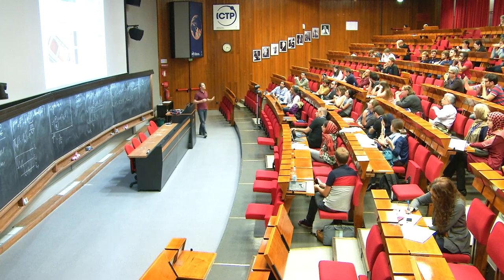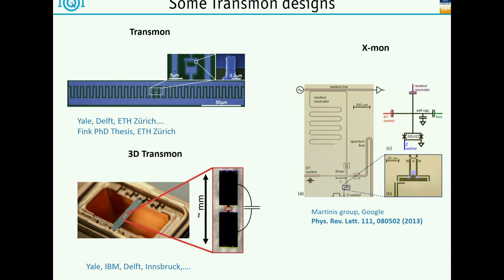Here you can see actual pictures of a variety of transmon qubits. Up on the top left are the initial transmon qubits that have been built - you see those large fingers, that's your capacitor. In the middle you see this loop, and on a zoom in you see one metallic film and another finger lying on top with an insulating barrier in between - that's your junction. In this case there are two junctions within a ring, making it a frequency-tunable qubit because you can apply a magnetic field and change the effective Josephson energy.